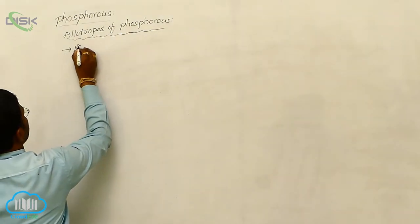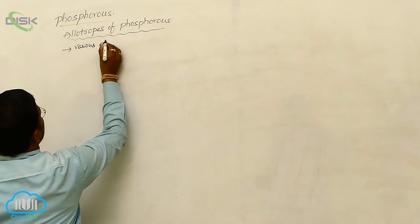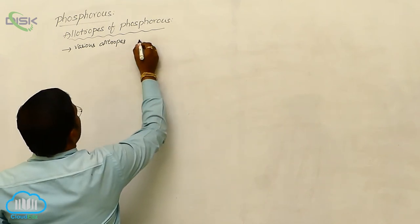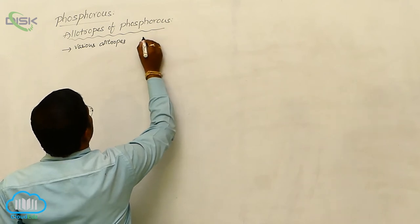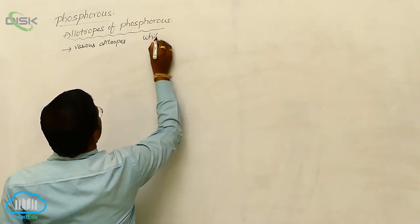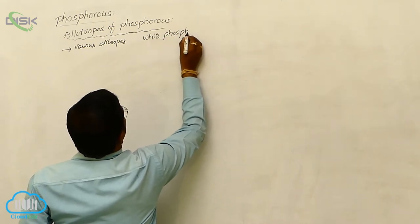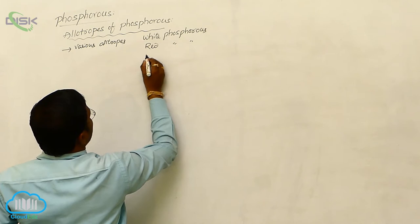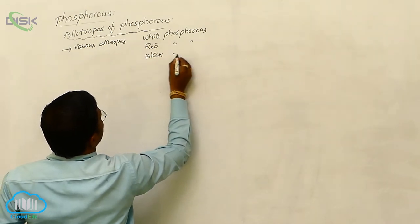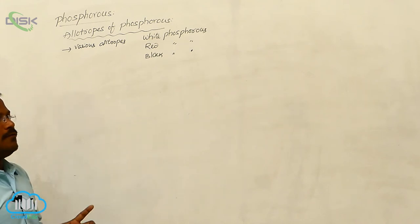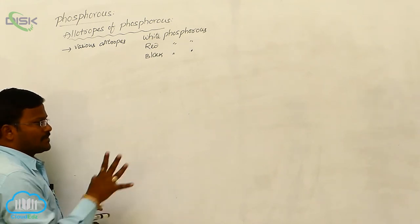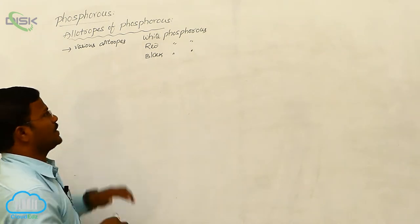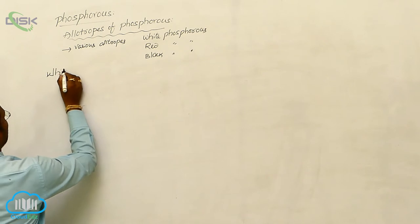Phosphorus can form various allotropes. Among those, the most important allotropes of phosphorus are white phosphorus, red phosphorus, and black phosphorus. Let us have a discussion regarding white phosphorus.